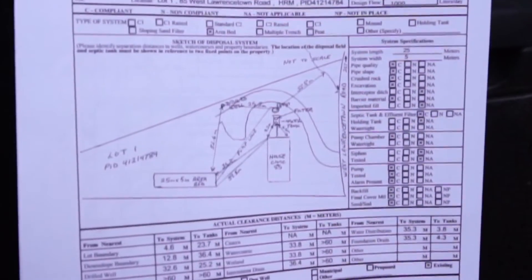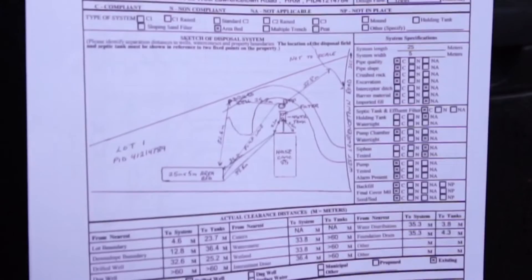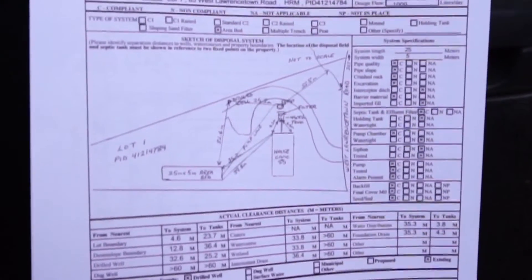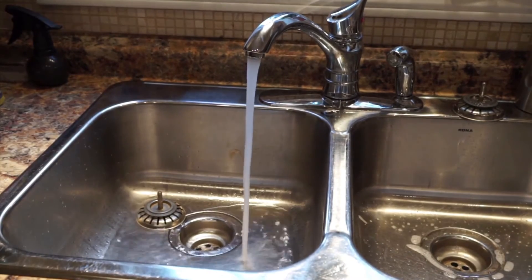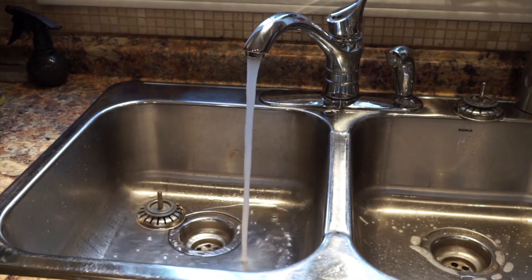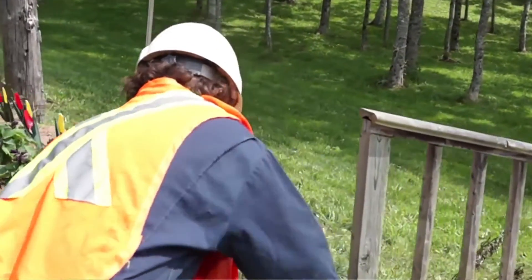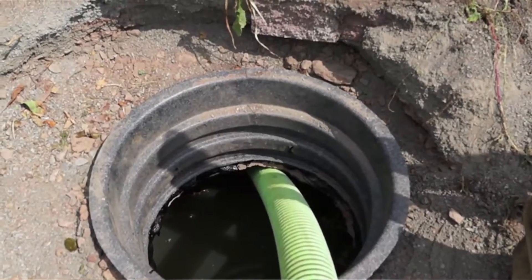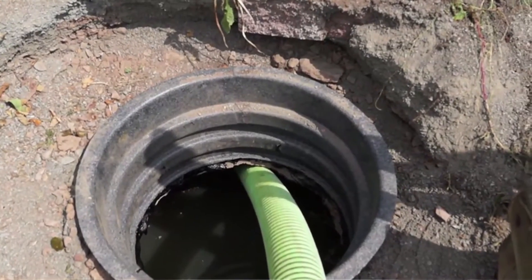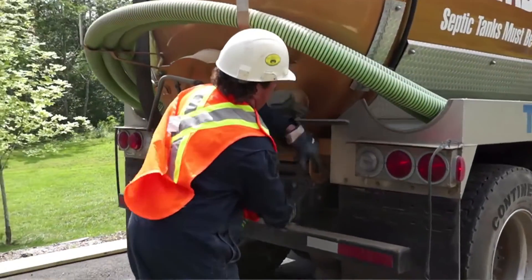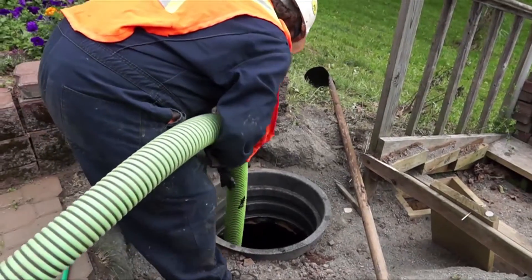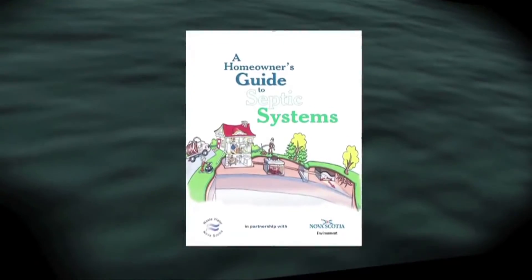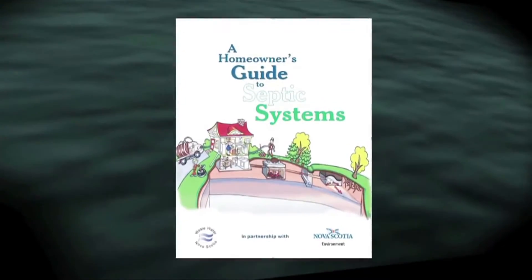This will include a diagram of the system, which will show the location of all parts of the system and should be kept with the deed for future reference. The septic system is now ready for the homeowner to use. To make the system last as long as possible, the homeowner should take proper care of the system, including having the septic tank pumped every three to five years. More information on properly using an on-site sewage system can be found in the booklet A Homeowner's Guide to Septic Systems.